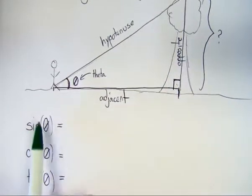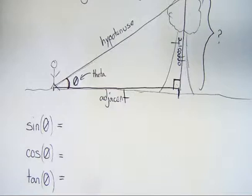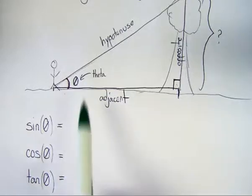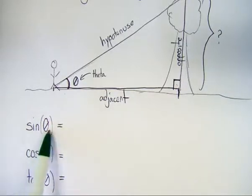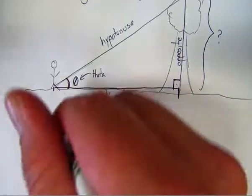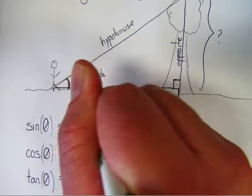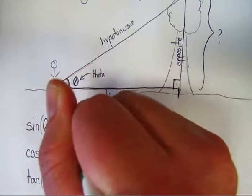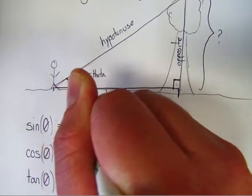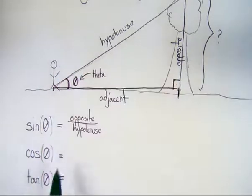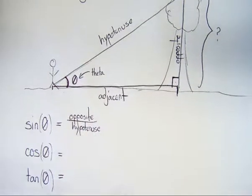So if I take the sine of theta, the number that I'm going to get from that, if I, let's say theta was 30 degrees, and I put into the calculator sine of 30, that number that I'm going to get back is going to be equal to the length of the opposite side divided by the length of the hypotenuse.